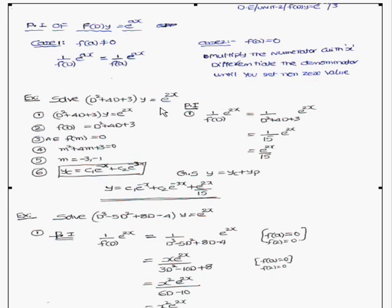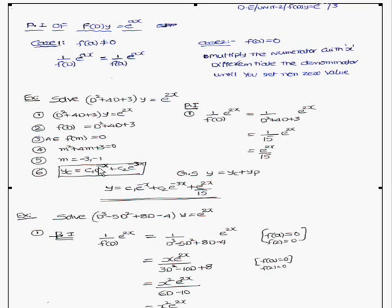Let us go through the example. The problem is (D² + 4D + 3)y = e^(2x), so f(D) = D² + 4D + 3. The auxiliary equation is f(m) = 0, that is m² + 4m + 3 = 0, giving m = -3 and m = -1. Therefore, the complementary function is yc = c₁e^(-x) + c₂e^(-3x).